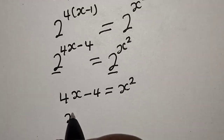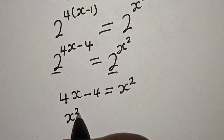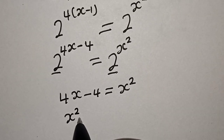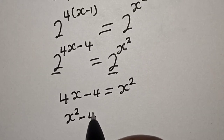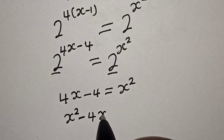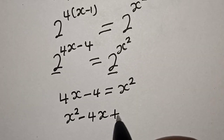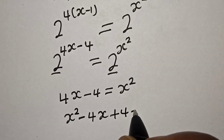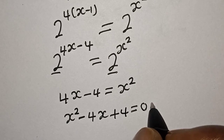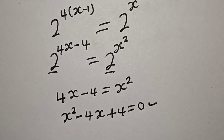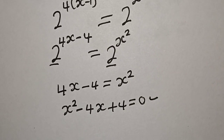So x squared minus 4x plus 4 is equal to 0. This is a quadratic equation.